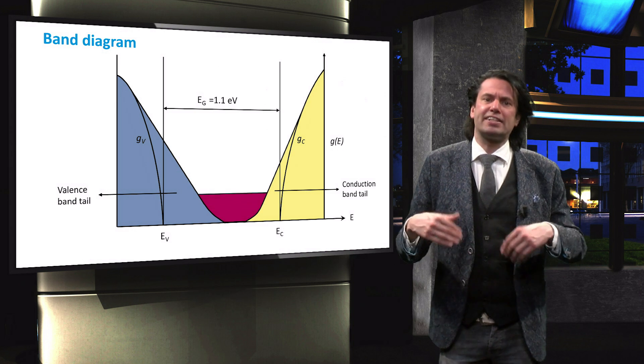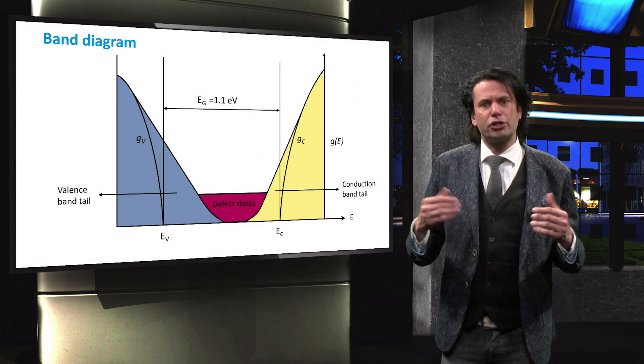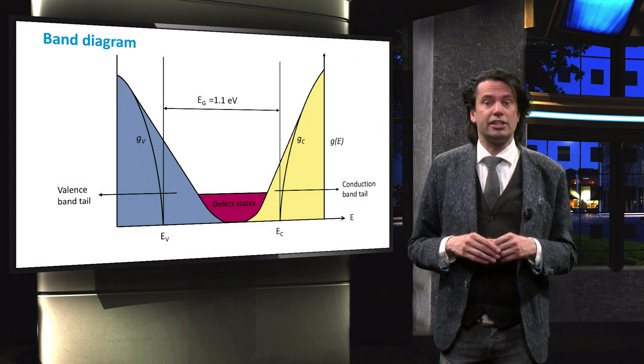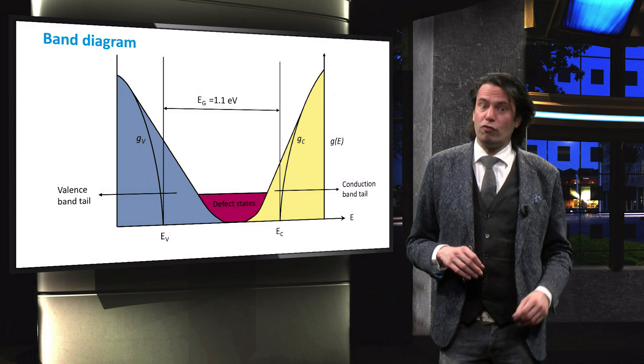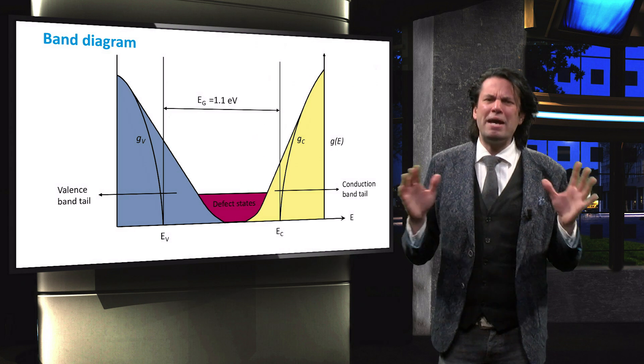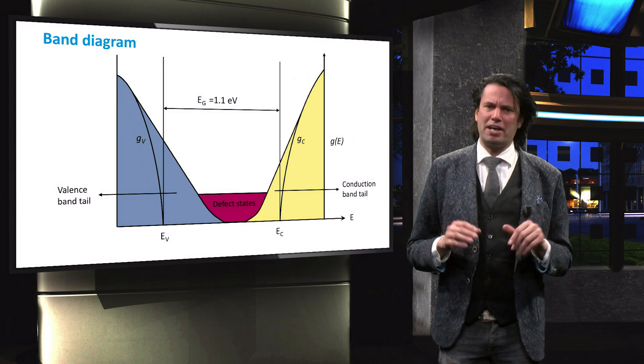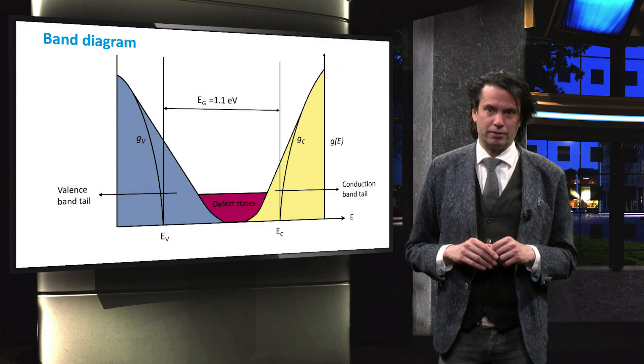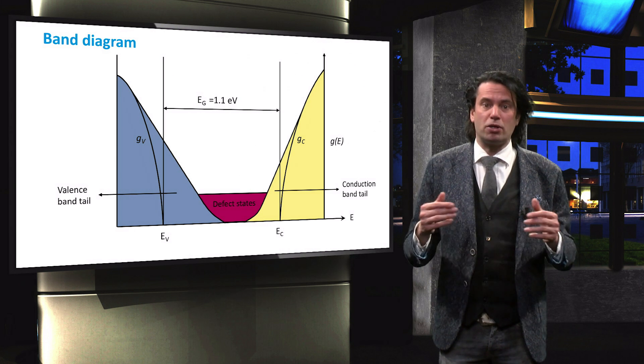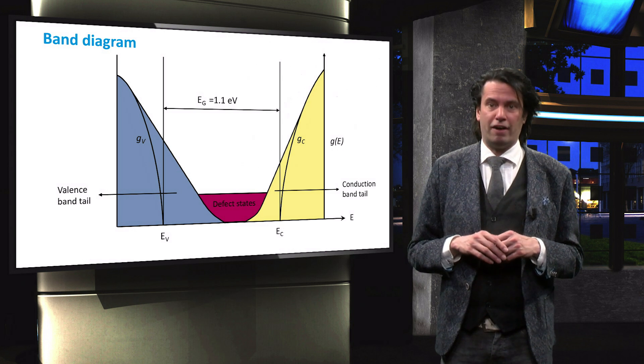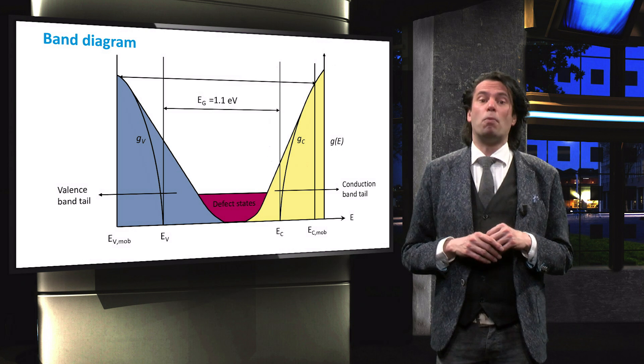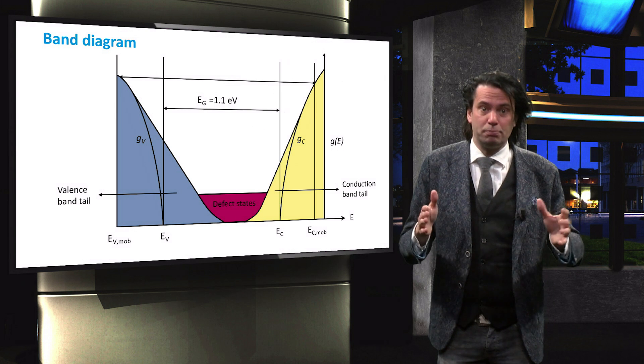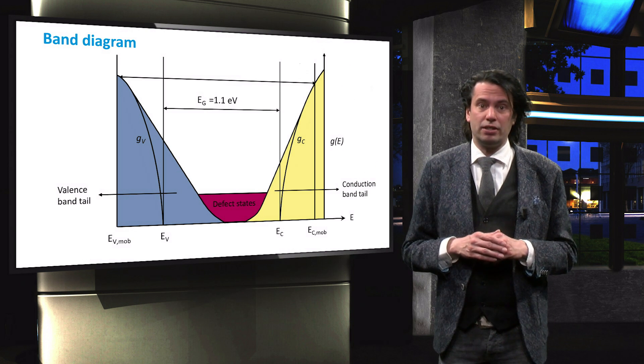In addition, the defect states in amorphous silicon create allowed energy states in the middle of the forbidden gap. The absence of well-defined band edges makes it difficult to define a band gap energy for amorphous silicon. Empirically, however, we find that an optical band gap can still be defined. This band gap is also known as the mobility gap, which extends between the top of the band tail edges.